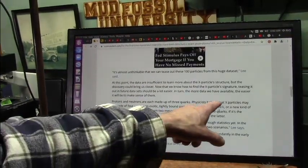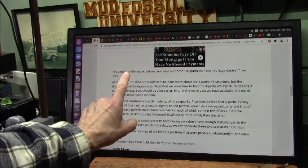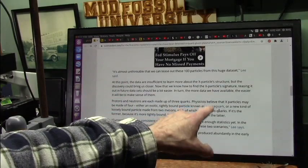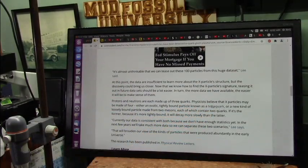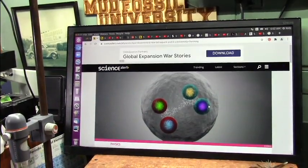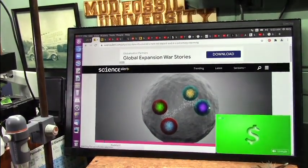Alright, so don't forget. Physicists believe X particles may be made of four tightly bound particles known as a tetraquark. That is correct. And here's what it looks sort of like in a picture drawn by somebody. I can see why they're so upset.